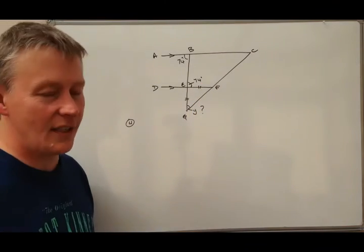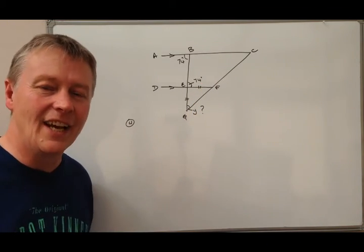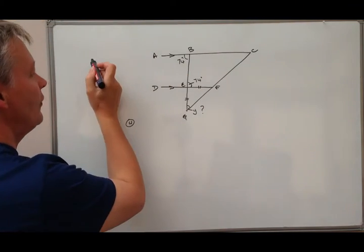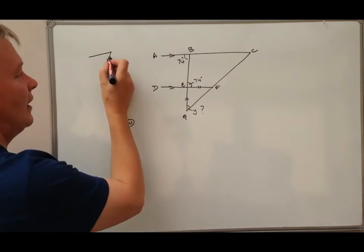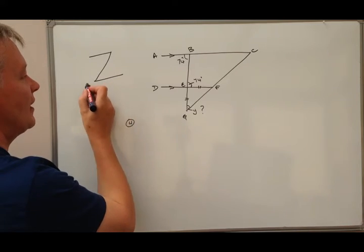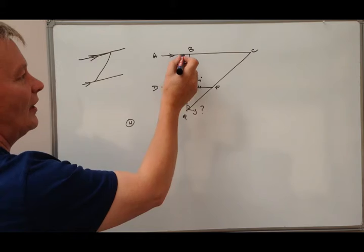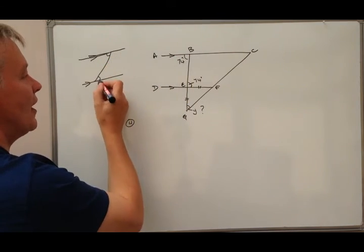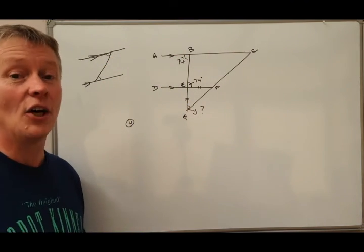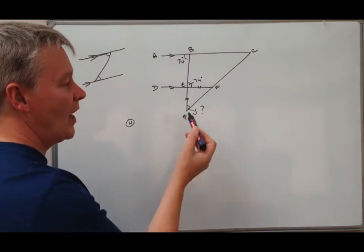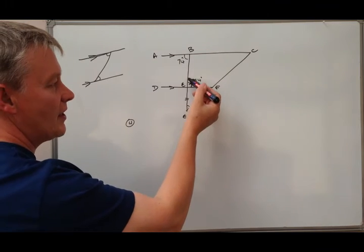Actually here we've got something like this, greatly exaggerated. I've got two parallel lines and I know this is 74, so therefore this is 74. It's called alternate angles being equal. I also know that this is a straight line, so what I've got is something like this where this bit is the same as this bit and this is the triangle here.